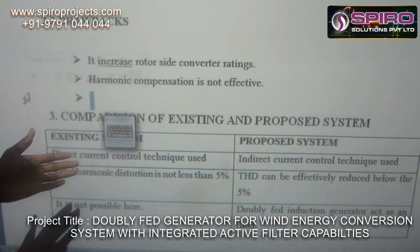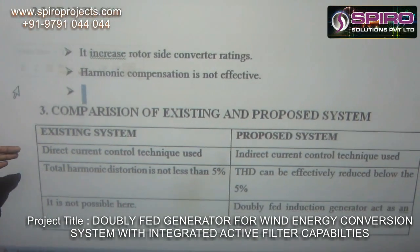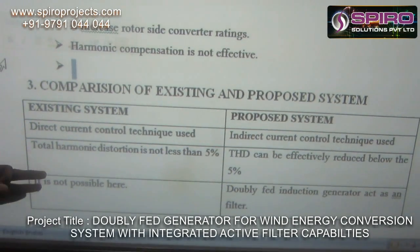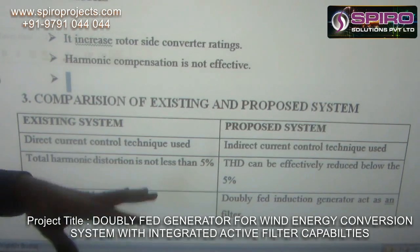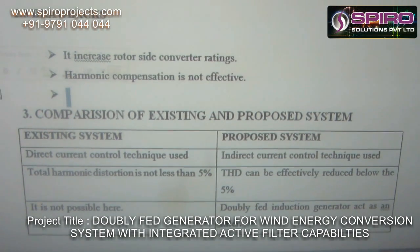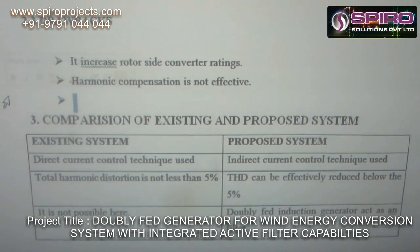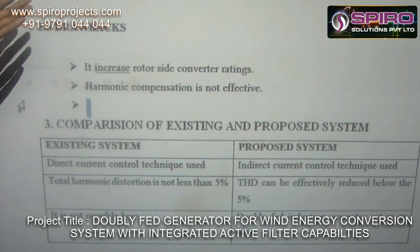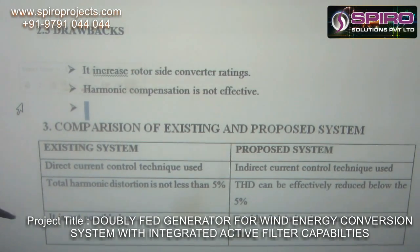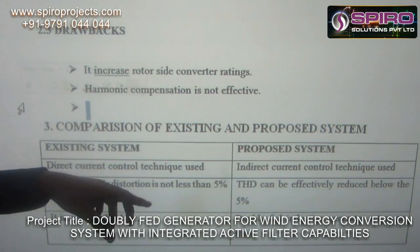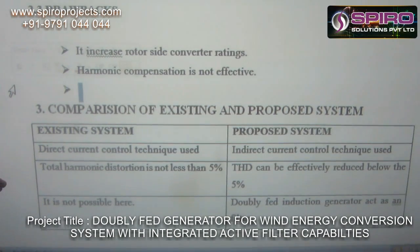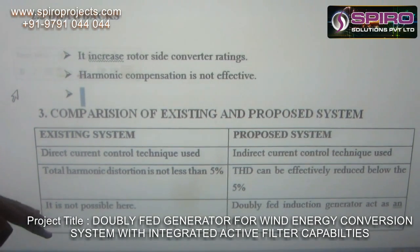This is the existing system, this is the proposed system. In the existing system, a direct current control technique is used. In the proposed system, an indirect current control technique is used. If I use the indirect current control technique, I can be able to eliminate harmonics and improve power quality. In the proposed system, the THD is very very less.